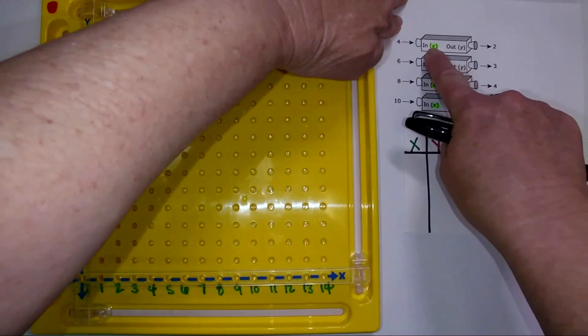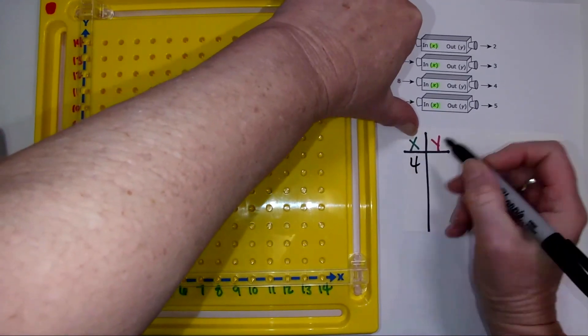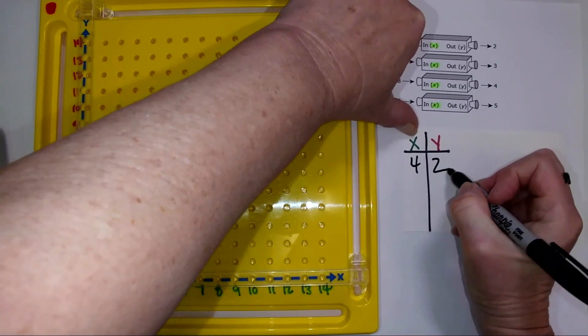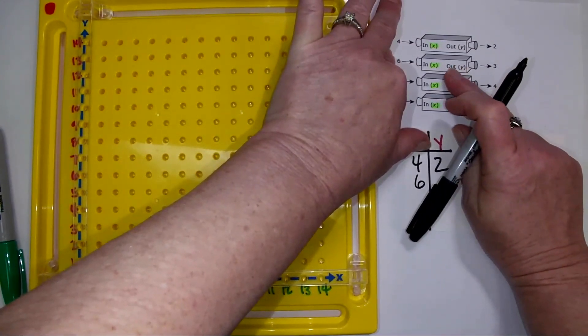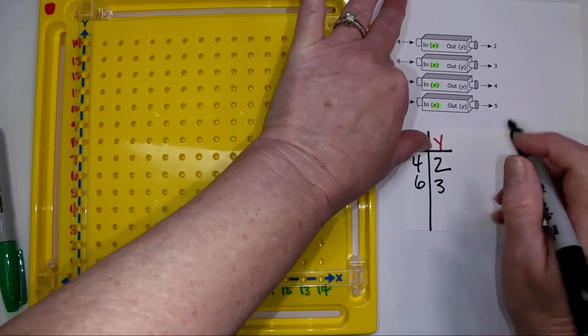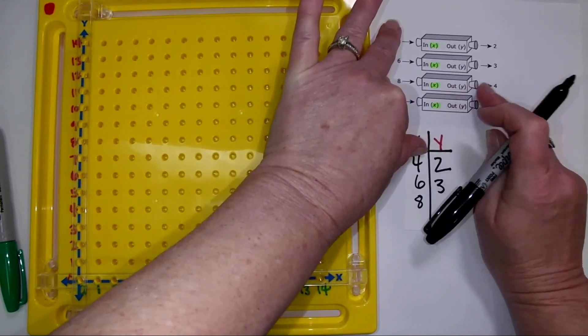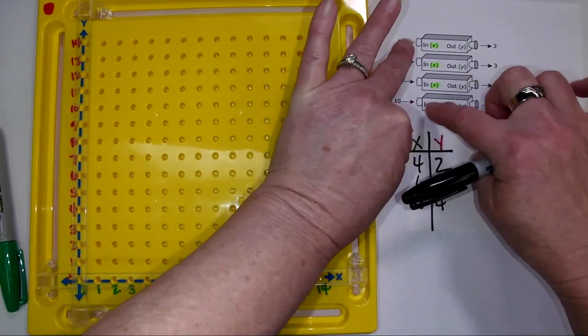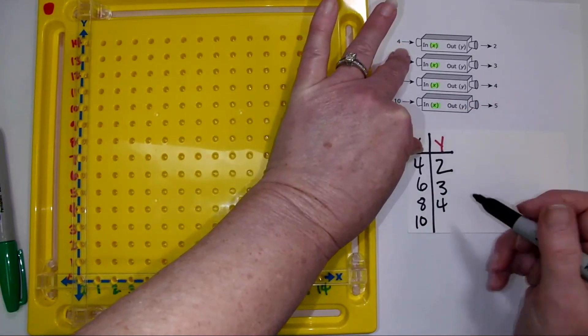4 is my input, it's x, it goes under x. 2 is my y, my output. My input x is 6, my output y is 3. My input x is 8, my output y is 4. And you've labeled these, they should be able to follow this. Output y is 5.